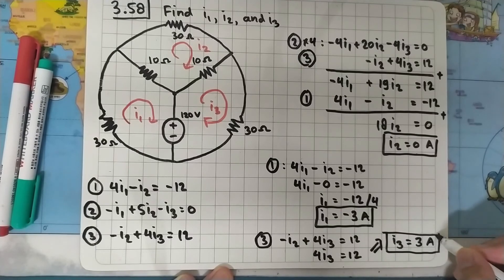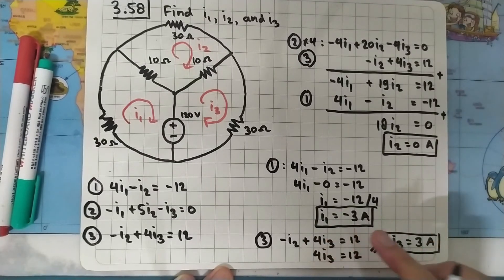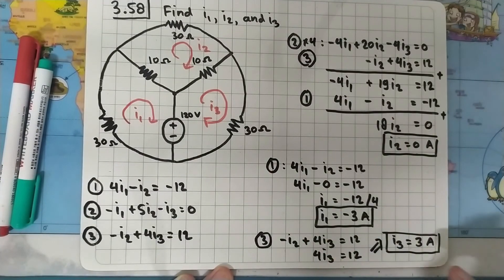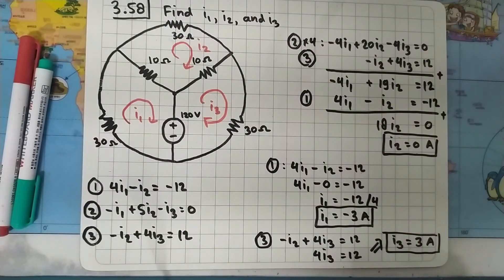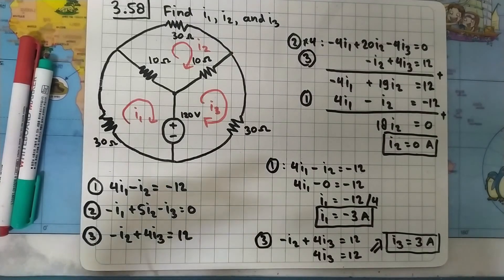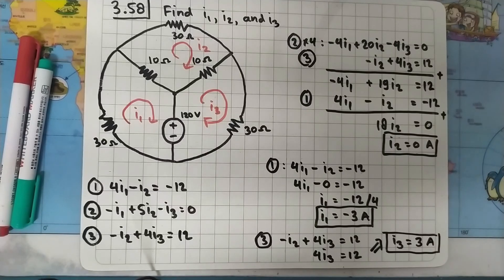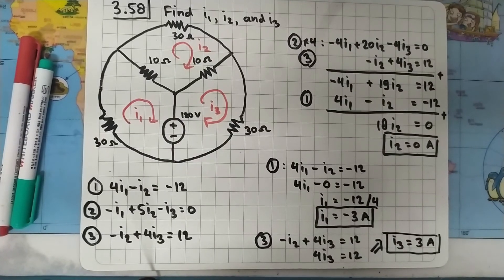So our final answers are: i1 equals minus 3 amperes, i2 equals 0 amperes, and i3 equals 3 amperes. Hopefully I did not make any mistakes in the calculation. Thank you for watching, and don't forget to subscribe to my channel.